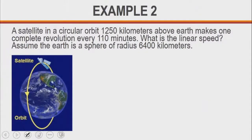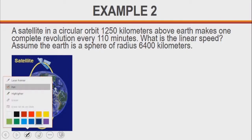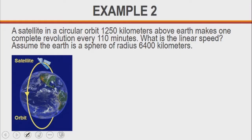For example number two, we are given that a satellite in a circular orbit 1,250 kilometers above Earth makes one complete revolution every 110 minutes. This is special because we have the Earth, and now we have this satellite revolving around the Earth's atmosphere. We are told that the Earth has a radius r which is 6,400 kilometers.